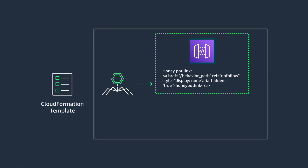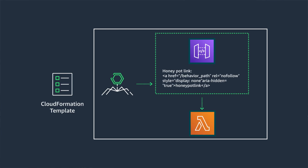Lastly, the template allows for adding a honeypot to your application, which can be helpful to address bot behavior as well. A honeypot is a hidden link that is embedded into your application code, and humans generally would not click on it. The way to do this is by leveraging an API Gateway endpoint, which will then trigger a Lambda function and add the bot's IP address to a WAF block list.